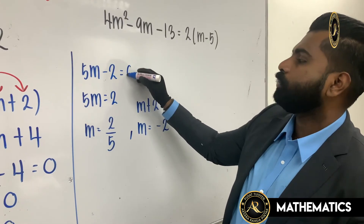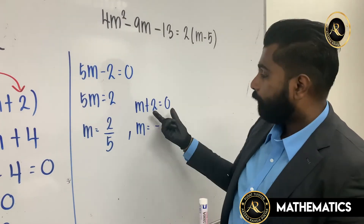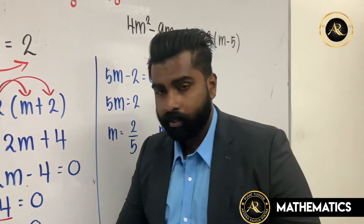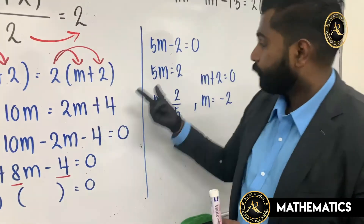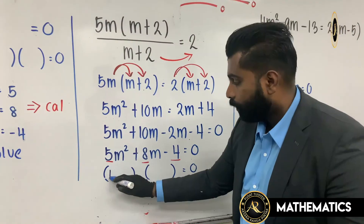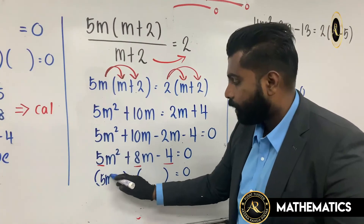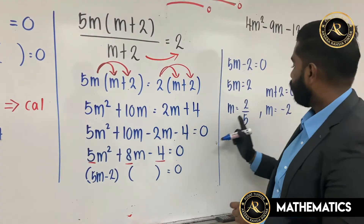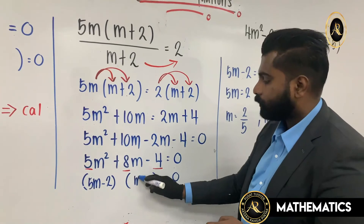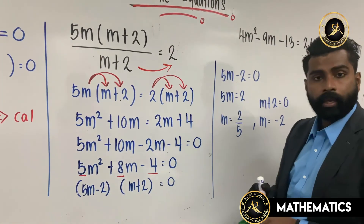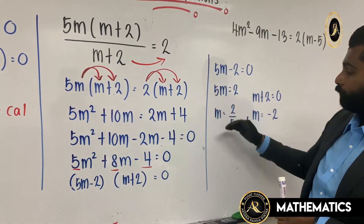After getting equal to zero, take each factor and put it inside the bracket. So we get (5m minus 2)(m plus 2) equals to zero. This is the final answer for solving the quadratic equation.